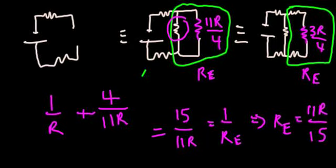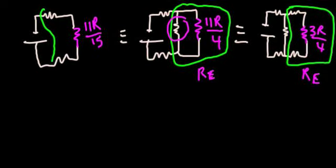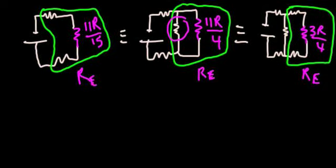We can redraw the circuit again, replacing that green bubble with a single resistor of 11R over 15. And now we have three more resistors, all in series, and we can replace those three like we had before.